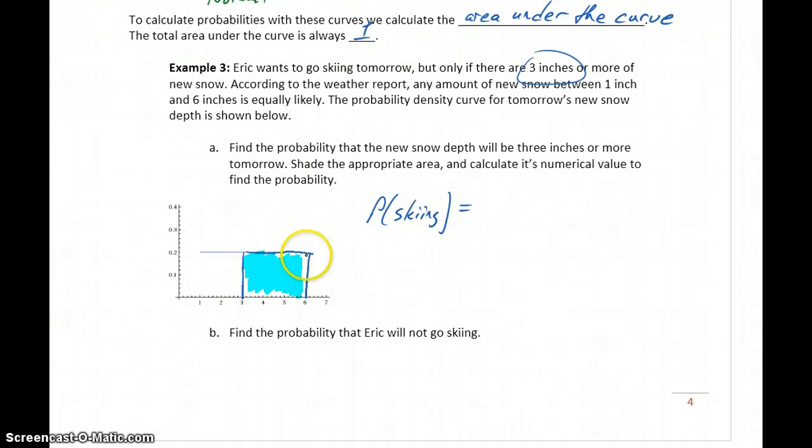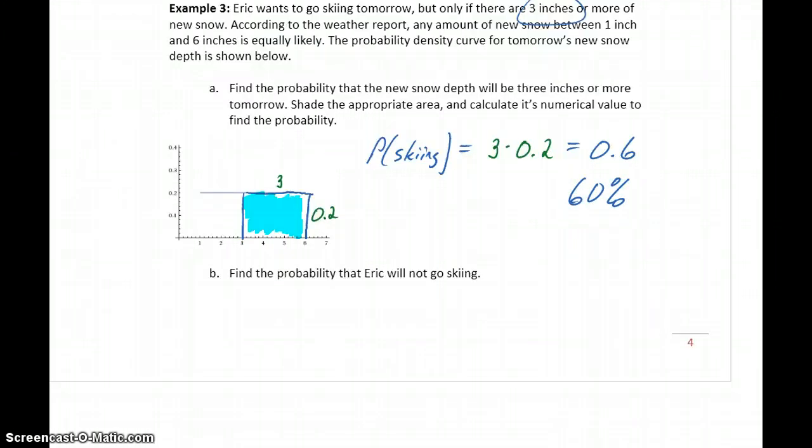So the width of this rectangle is a distance from 3 to 6, so we have a width of 3 and a height of 0.2. So we can calculate the probability as 3 times 0.2 or 0.6. So there's a 60% chance there will be enough new snow and he'll go skiing tomorrow.